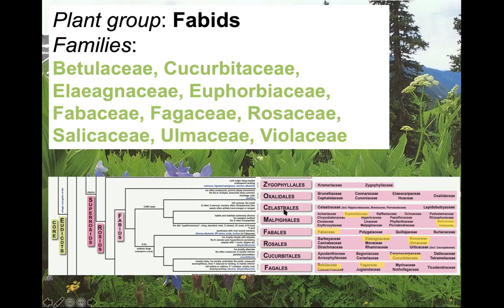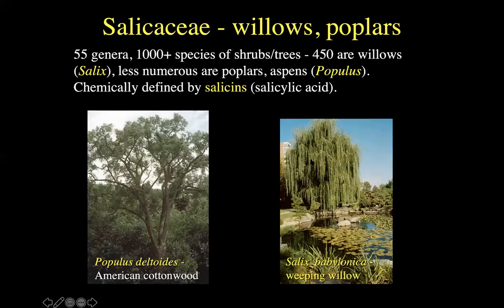I've arranged these not so much by orders, but by broad types to hopefully ease learning. The first group I'm massing together are deciduous angiosperm trees in this clade. The first family we're going to talk about is the Salicaceae, the willows and poplars. Fairly species-rich, particularly within the genus Salix, the willows.